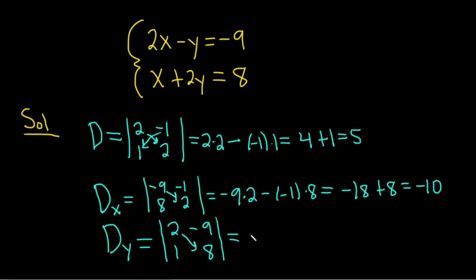So 2 times 8 minus negative 9 times 1. This will be equal to 16 plus 9. So it's going to be 25.